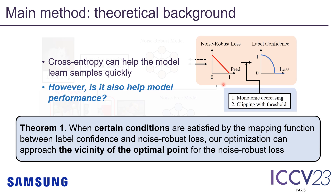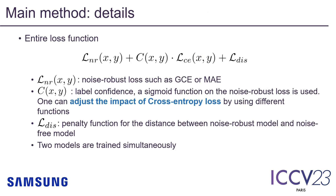However, does it also help the model improve its performance? To answer this question, we provide our theoretical analysis. When the mapping function satisfies certain conditions we mentioned, our optimization can approach the vicinity of the optimal point for the noise-robust loss. Our model is trained using these loss functions. First, the noise-robust loss is an existing loss function such as GCE or MAE. Then for designing the label confidence, we use a sigmoid function on the noise-robust loss. One can adjust the impact of cross-entropy loss by using different functions. The last term is a penalty function for the distance between the noise-robust model and the noise-free model.